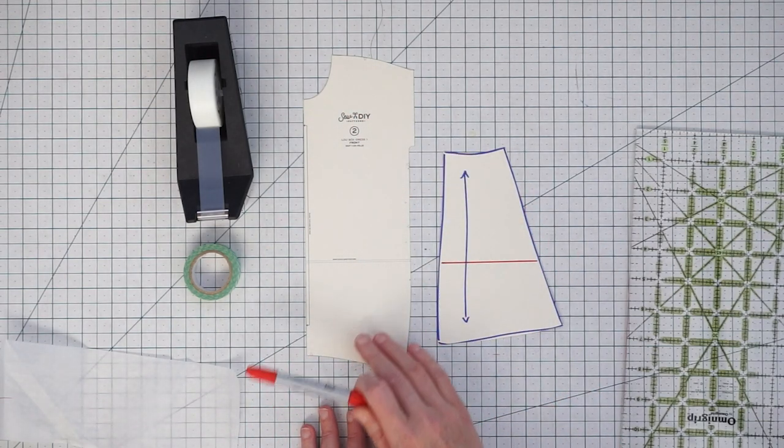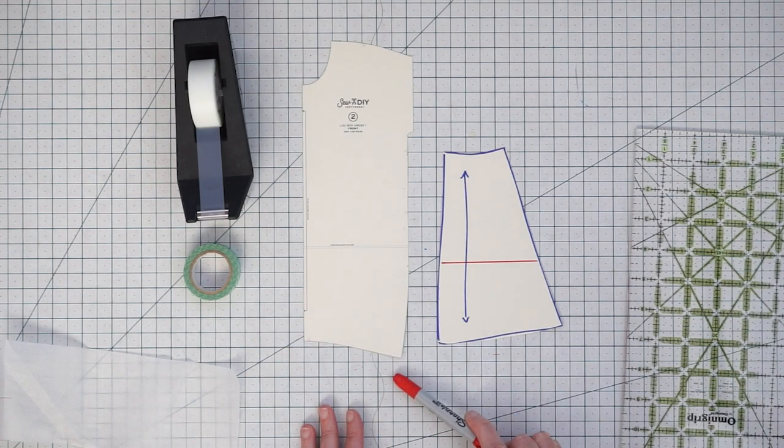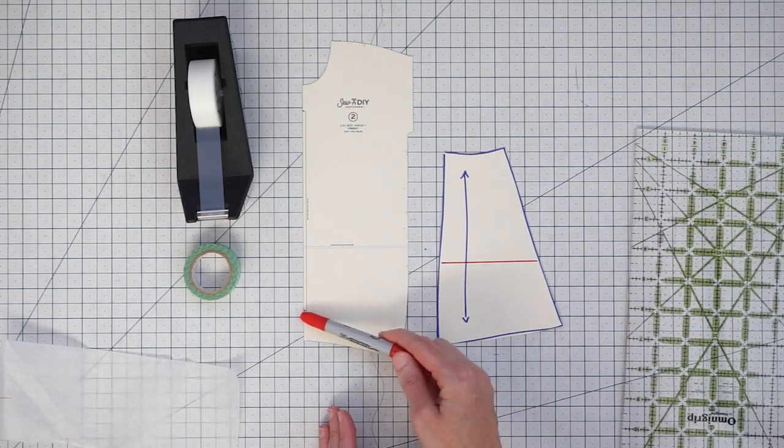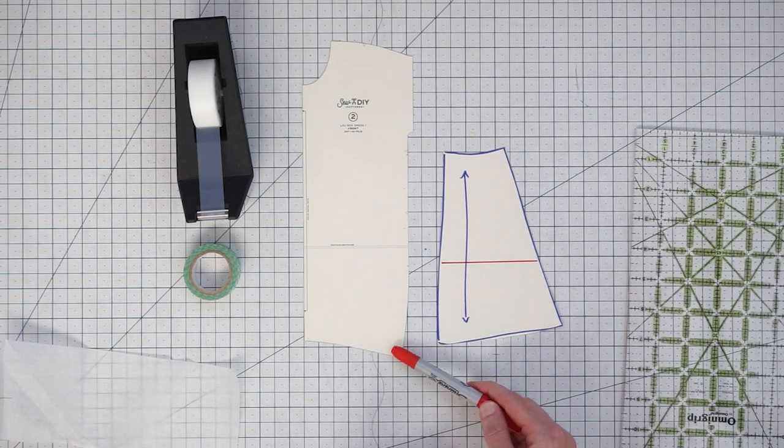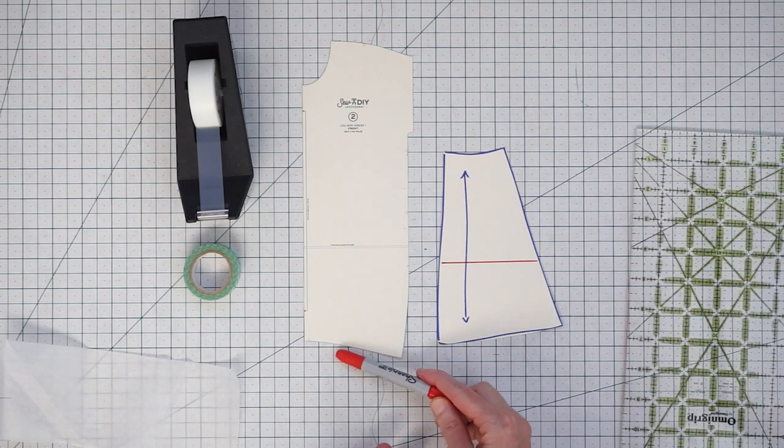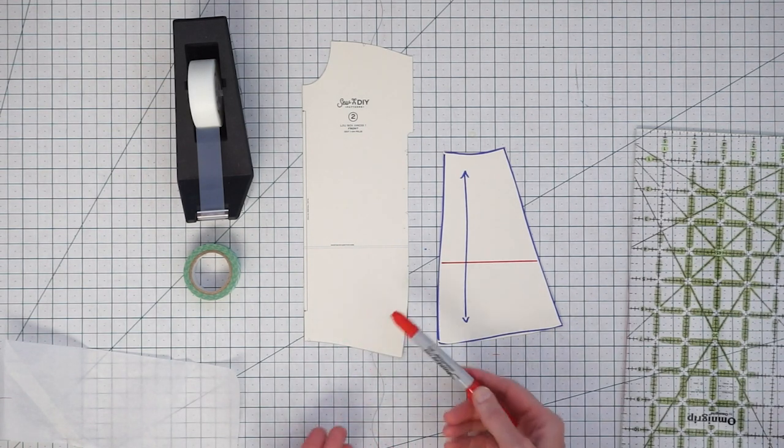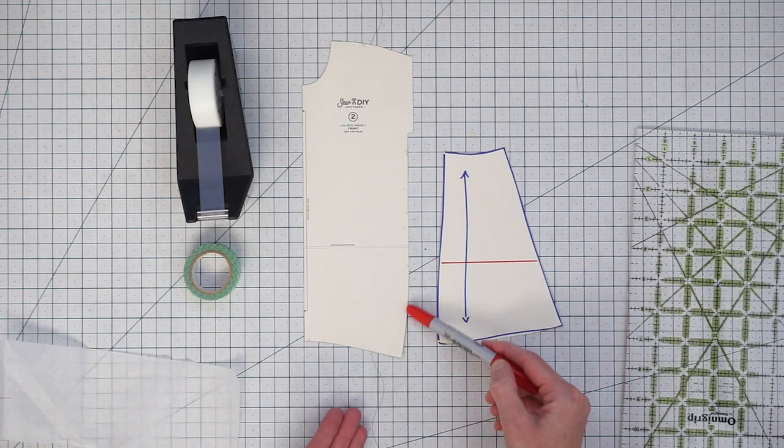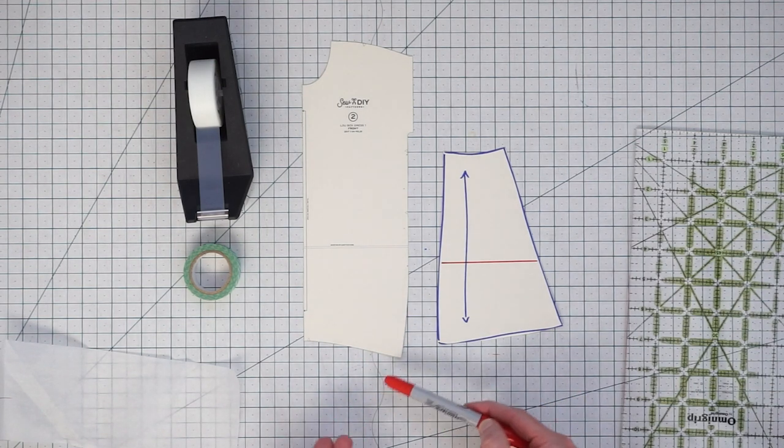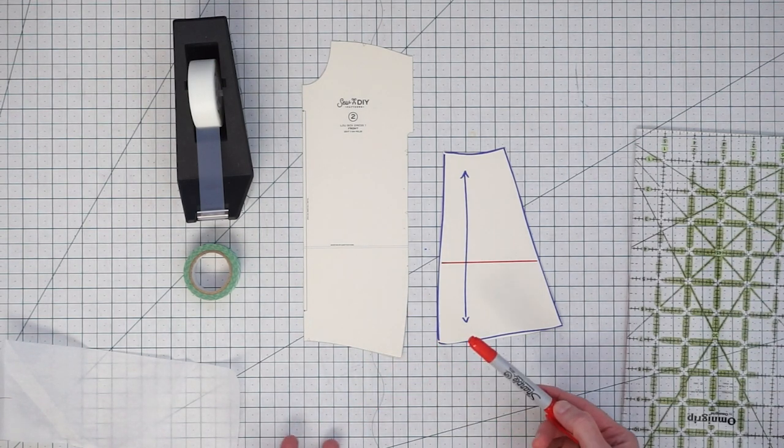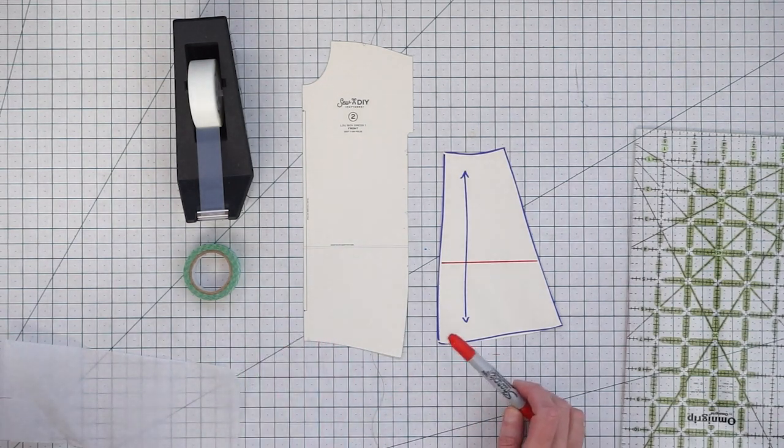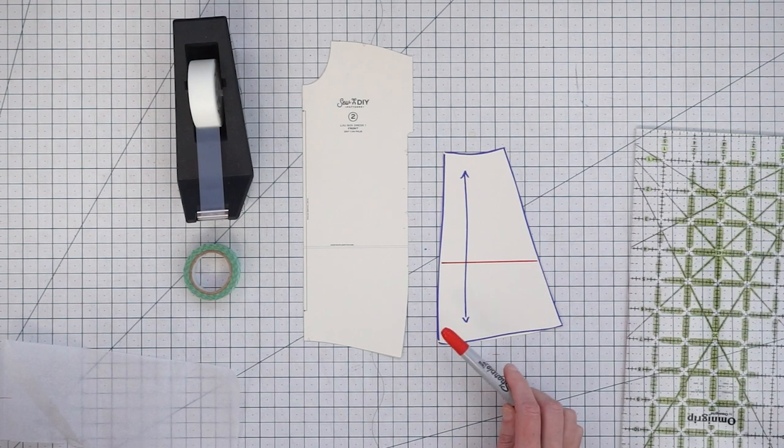But because we have this curved edge and this pattern uses a facing to finish the hem, it's not ideal to lengthen from the bottom. If you lengthen from the bottom, it's going to keep getting smaller and smaller and you're not going to be able to walk. Walking is really one of the big things that you have to consider when lengthening or shortening.